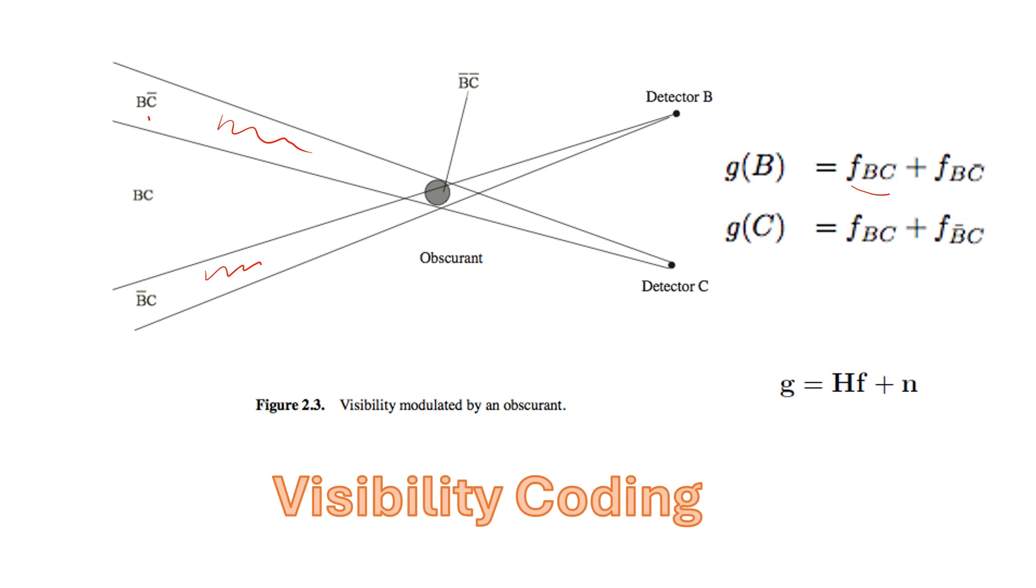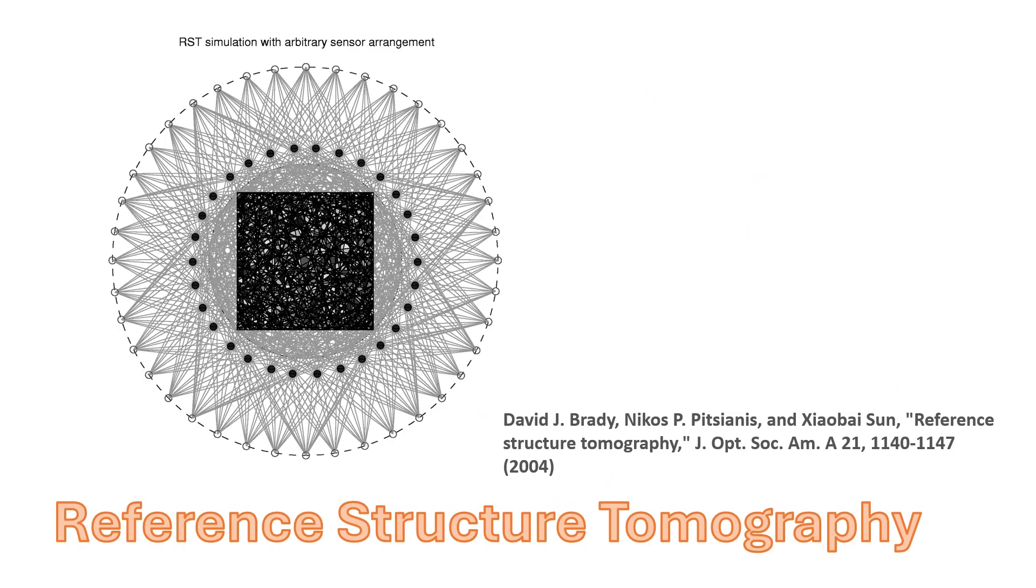This is like the world's simplest system, which is light radiates in all directions, you can see it or not, and that creates a forward model. This forward model can be generalized into a very complex system. You put a bunch of obscurants in space that divides the space, and if you have enough obscurants and detectors, then you can invert that and estimate the space.